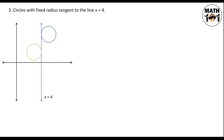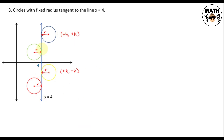Analyzing the center locations: for circles to the right of the tangent line, h is positive, k can be positive or negative. For circles to the left, h is also determined by the radius. Since the x-coordinate of the tangent point is 4, adding or subtracting the radius gives the location of h. Therefore, the center of all these circles is located at h equals 4 plus or minus r, and k is plus or minus k.